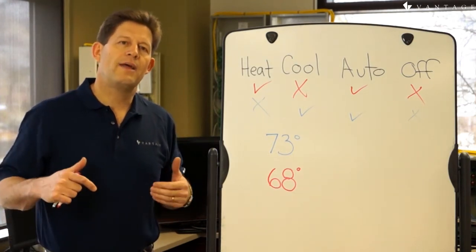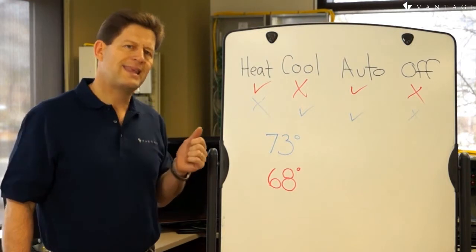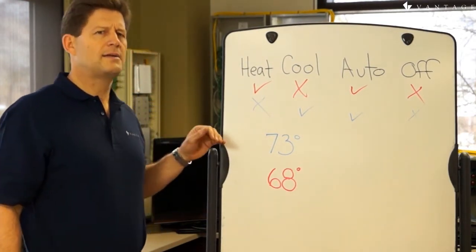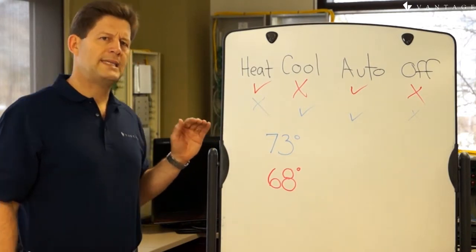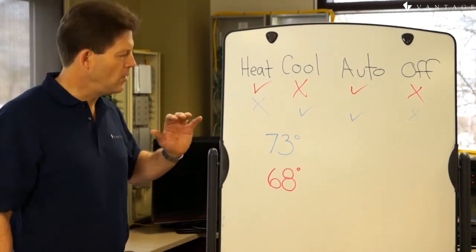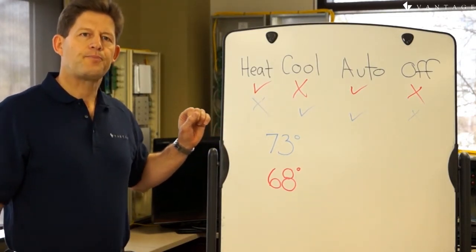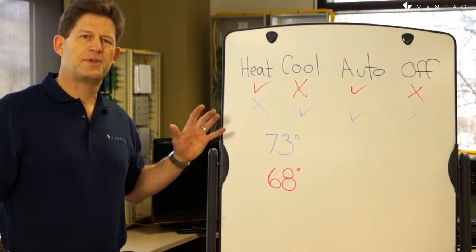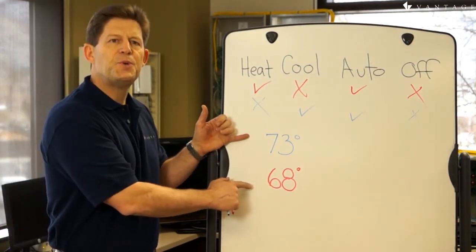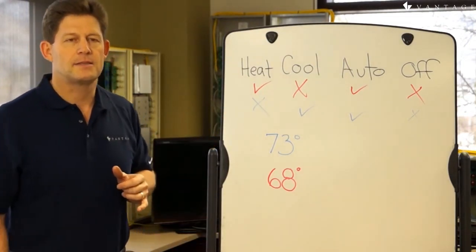Now that we've reviewed the operation modes and set points, let's talk about how you might think of set points. You might in some context think of them as a target temperature at which you want to maintain the space. This is particularly true when in only one system mode, like heat or cool. But in other contexts, particularly when the space is unoccupied, we think of the two set points as defining the acceptable temperature band limits.